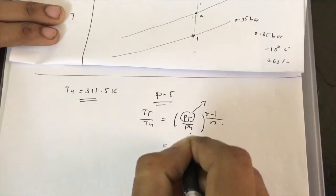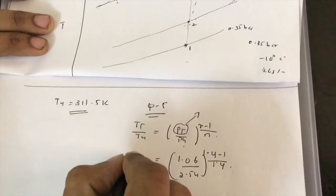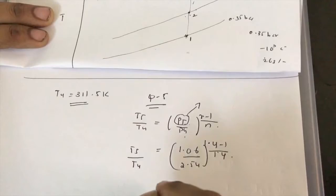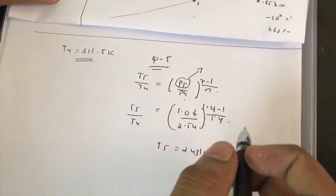Substituting P5 = cabin pressure = 1.06 bar, P4 = 2.54 bar, T4 = 311.5 K, and γ = 1.4 gives T5 = 243 Kelvin for the ideal expansion.